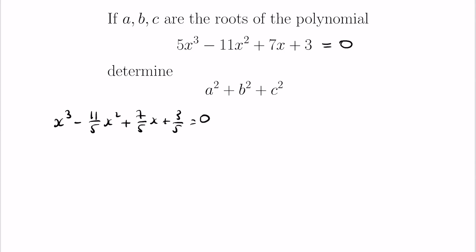And now because of Vieta we have access to some information. Here this number with the negative sign is the negative of the sum of the roots. So 11 fifths is going to itself equal the sum of the roots which is a plus b plus c. Furthermore 7 fifths is the sum of the pairwise products. So 7 fifths equals ab plus ac plus bc.